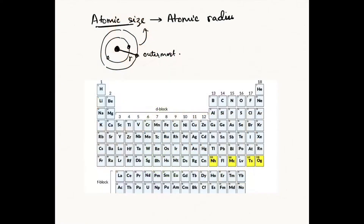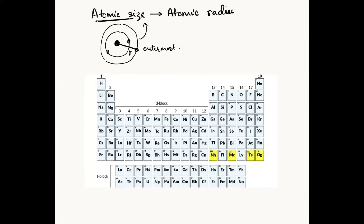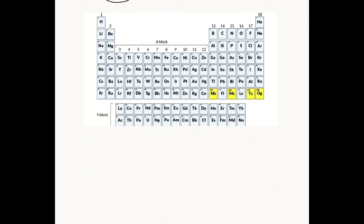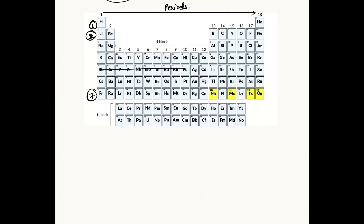There are many other ways of visualizing this idea of atomic radius, but we'll be looking at this one for now. We'll be considering Bohr's model of an atom as we draw the models and see how the atomic radius varies as we go along the periods of the periodic table. We've got seven periods — one, two, three, four, five, six, seven — as we go from left to right.